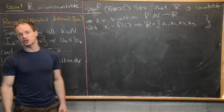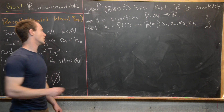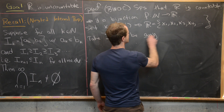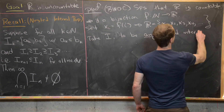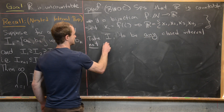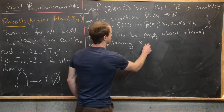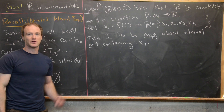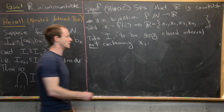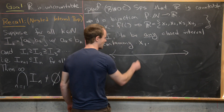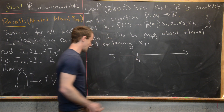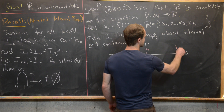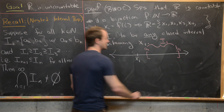Now we want to construct some closed intervals inductively. For our first step, we take I_1 to be any closed interval not containing x_1. You could write down a formula — for example, the closed interval from x_1 plus 1 to x_1 plus 2 — but we'll just say it's any closed interval not containing x_1. Let's make a picture: on the real number line, if x_1 is here, we take I_1 to start at A_1 and end at B_1, so this closed interval is I_1.